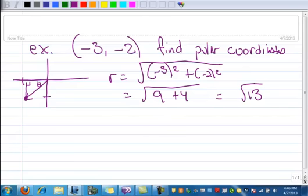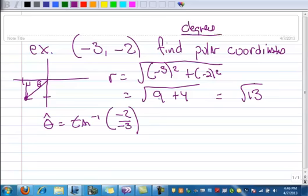So theta, right there, or theta hat. So theta is going to be our inverse tangent of the Y over the X. And let's see, let's do this one in degrees. So when I punch that in my calculator, I get 33.7 degrees. Hmm. Well, that doesn't look like it's in quadrant 3. It looks like it's in quadrant 1. Because a negative divided by negative is a positive. So when you put that in your calculator, the calculator doesn't know that that's quadrant 3.